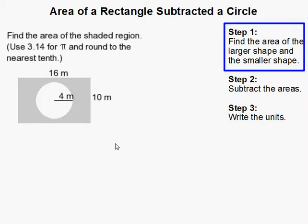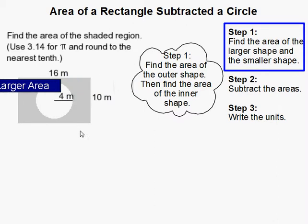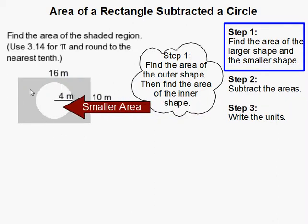Whenever we have a problem like this, we need to find the area of the larger shape, assuming that it is filled in, and then subtract the smaller area inside from it. That will give us the area of the shaded region.